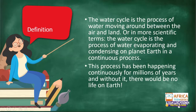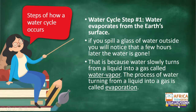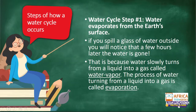Moving on to the steps of a water cycle. We know water continuously moves from the land to the air — now we find out how. Step one of the water cycle: water evaporates from Earth's surface. First, water must evaporate — for example, if you take a glass of water.